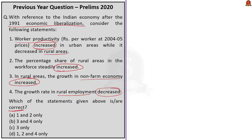The options are: Option A — 1 and 2 only; Option B — 3 and 4 only; Option C — 3 only; Option D — 1, 2 and 4 only.